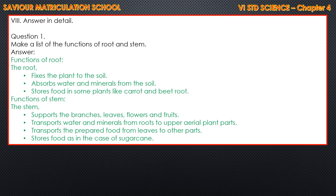Then, Roman number 8, page number 72, children — answer in detail. First one: Make a list of the functions of root and stem. Functions of root: the root fixes the plant to the soil, absorbs water and minerals from the soil, and stores food in some plants like carrot and beetroot. Functions of stem: the stem supports the branches, leaves, flowers and fruits; transports water and minerals from roots to upper aerial plant parts; transports the prepared food from leaves to the other parts; and stores food as in the case of sugarcane.